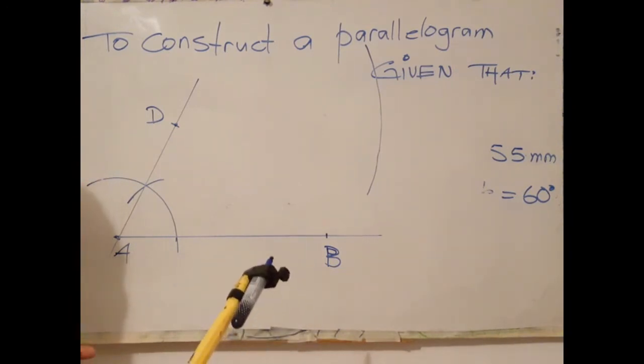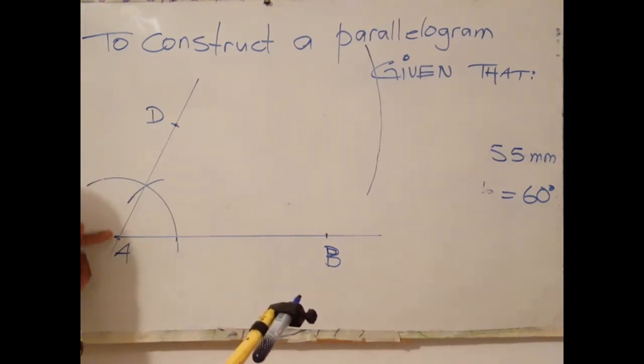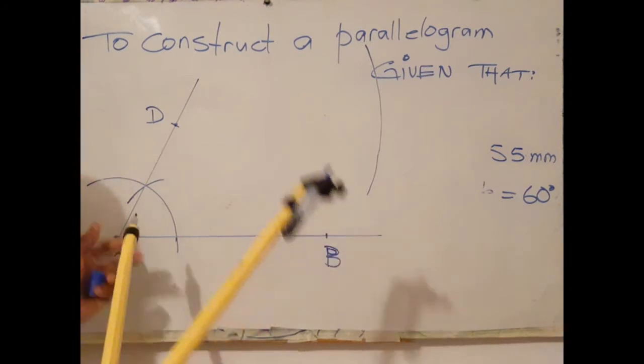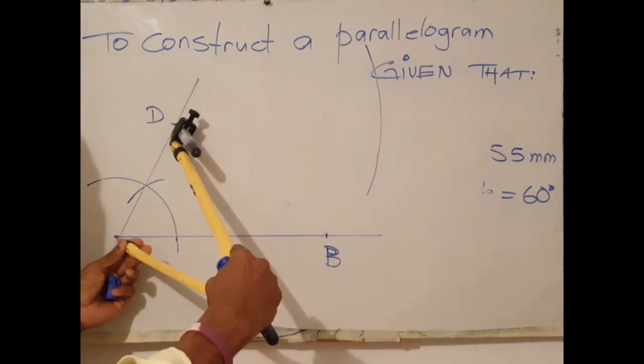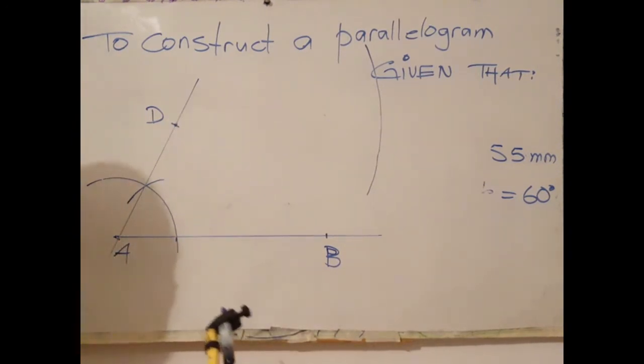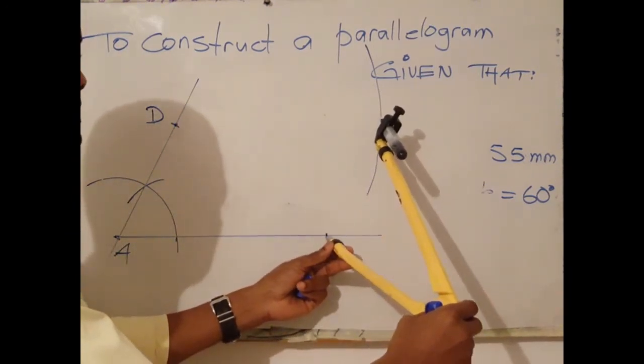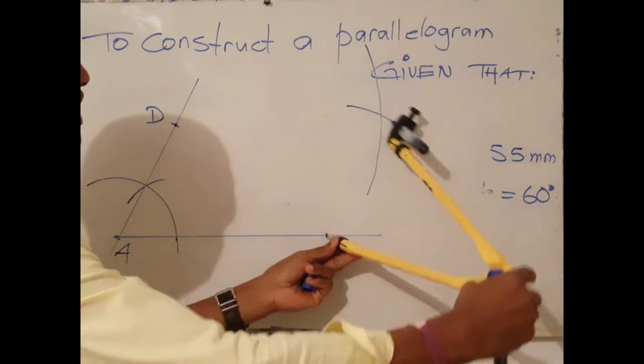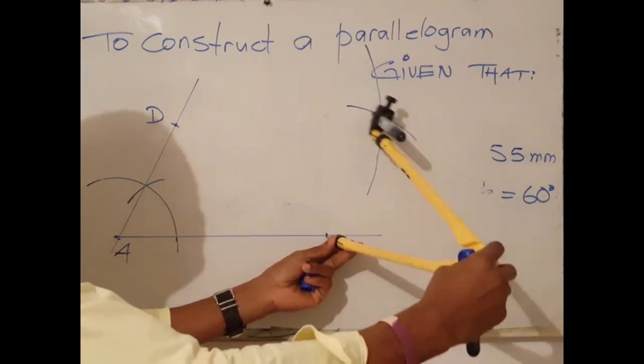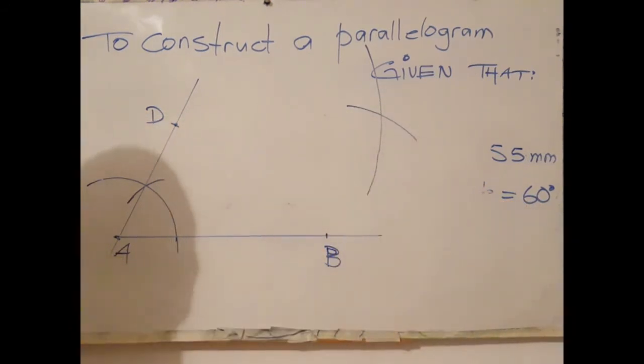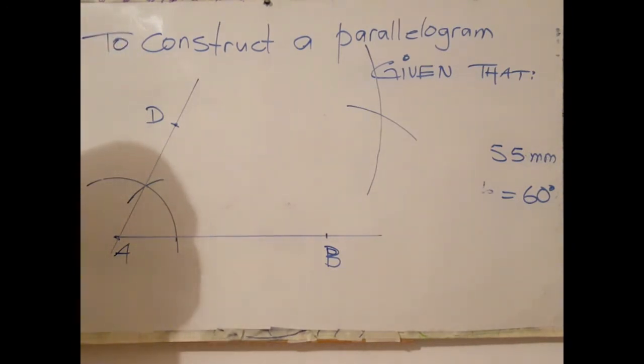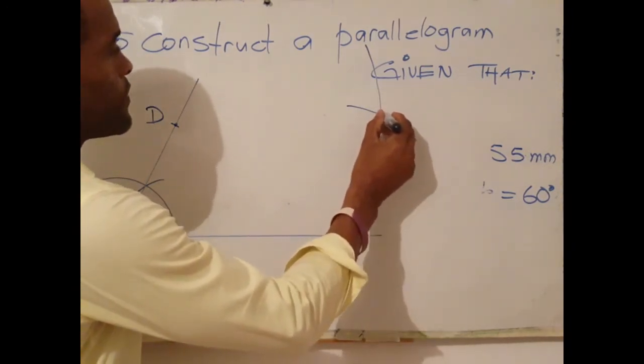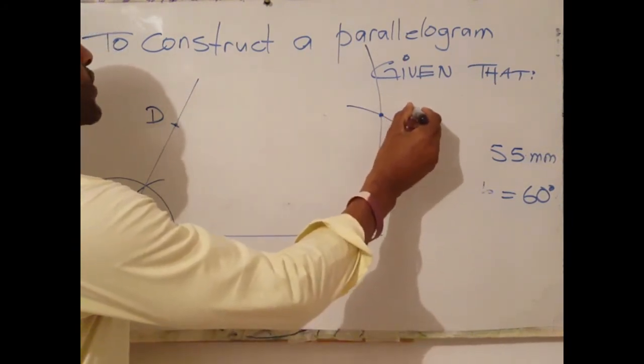Next step is to readjust your compass to side AB with center D. Using point B as center, describe an arc to cut the previous arc. At the point where both arcs meet is point C.